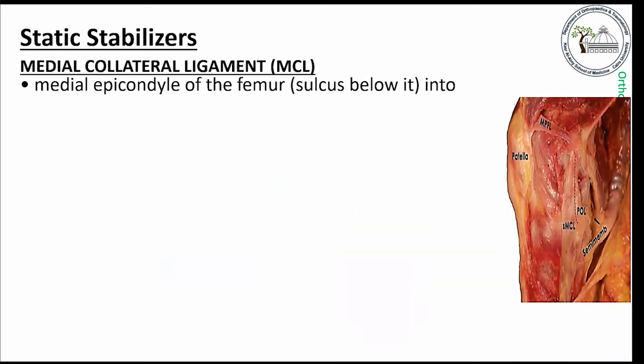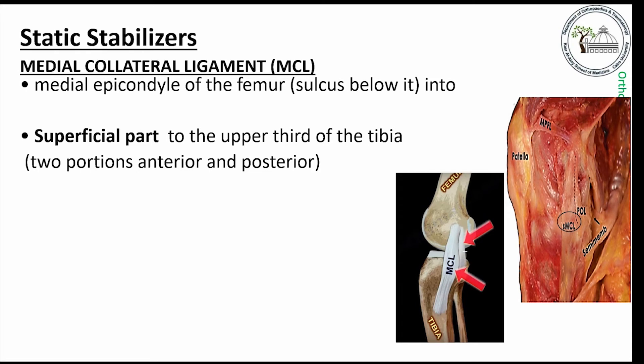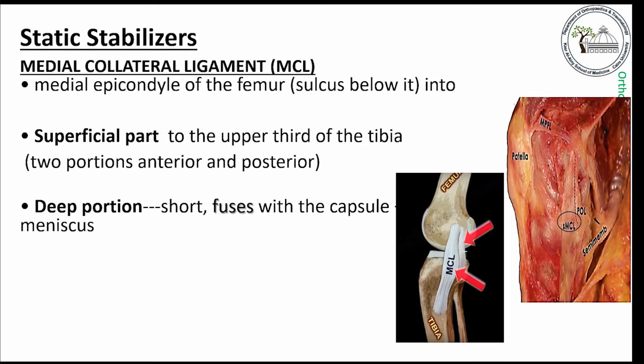The static stabilizers of the knee include the medial collateral ligament, which extends from the medial epicondyle in a superficial part — longer — extending to the upper third of the tibia, with two kinematically distinguished portions: anterior and posterior; and a deeper, shorter part that blends with the capsule and meniscus.